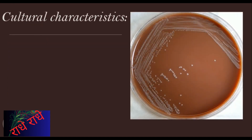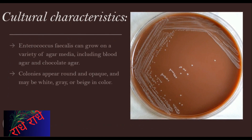Enterococcus faecalis is a bacteria found in various environments, including soil and water, as well as in the gut of humans and other animals. It can cause certain types of infections. In order to grow, Enterococcus faecalis needs various agar media, like blood agar and chocolate agar. The colonies can appear round and opaque, and their colors can be white, gray, or beige. Knowing these cultural characteristics can help with the identification and effective treatment of Enterococcus faecalis infections.